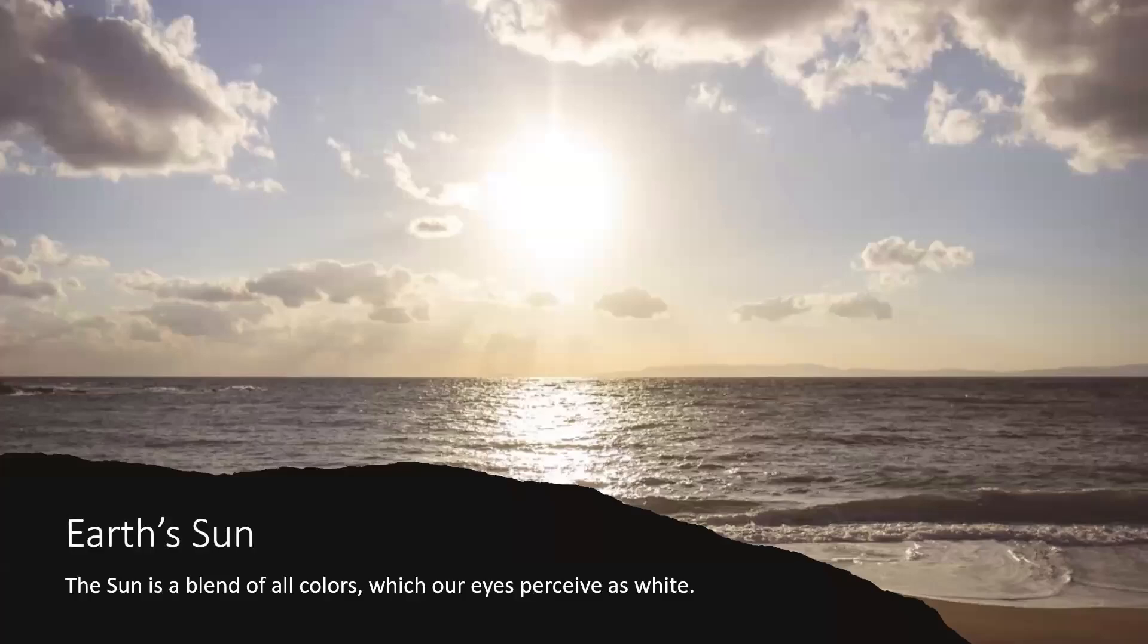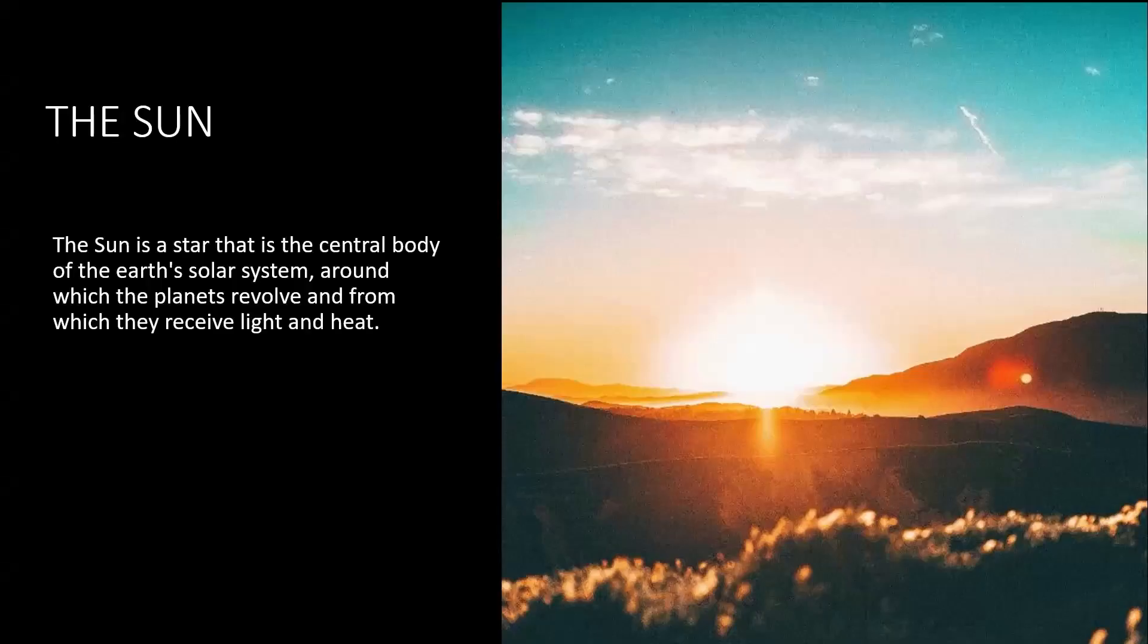Now the Sun contains all the colors. However, we see it as white. I think because it's going through our atmosphere, it tends to look a little bit yellow, but it's actually white. So the Sun is actually a star, and it is the central body of the Earth's solar system, around which the planets revolve, and from which they receive light and heat. All the planets in our solar system receive light and heat from the Sun.